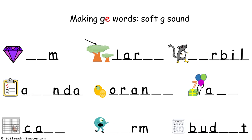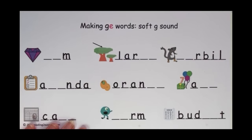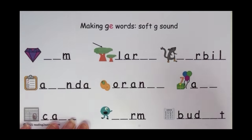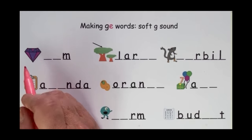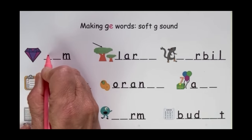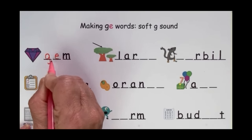This is a template for the first practice page that kids will complete, and it is also the template for the first demonstration lesson. Now it's time to have kids make words with the letters G-E that make the soft G sound. Let's look at our first picture — here we have a gem. The soft G is made with the letters G-E.